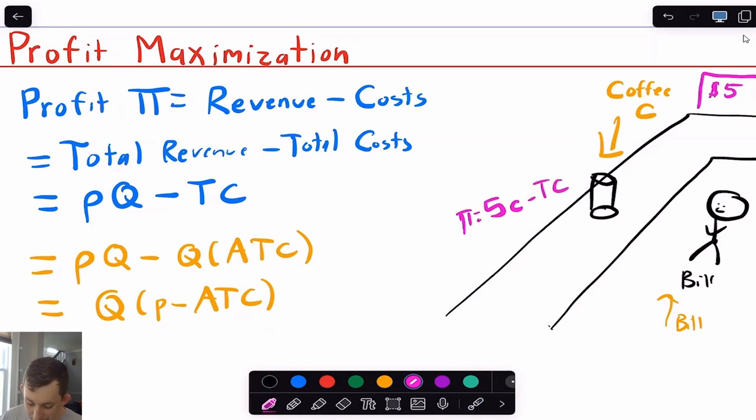Now the marginal benefit to Bill of selling a coffee is the price of the coffee. So that's going to be 5. And that is going to be the marginal benefit to Bill, it's also equal to the marginal revenue. Now that is going to be at the optimum equal to marginal cost, that is going to be, of course, the marginal cost.